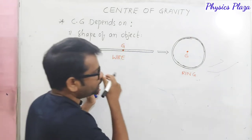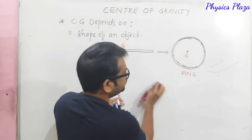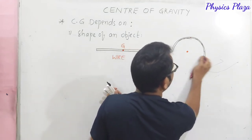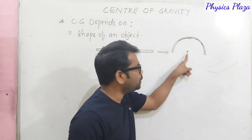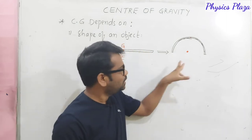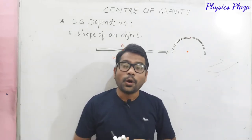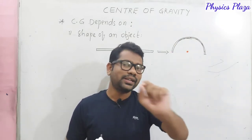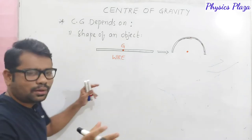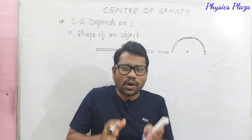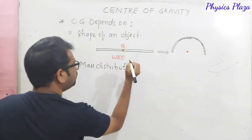You may get one doubt — if we cut the ring exactly in half and remove that half, where will the centre of gravity be now? To understand this, we need to understand another factor called mass distribution. Shape and mass distribution are almost related but let us discuss them in depth. The second factor is mass distribution — how mass is distributed.